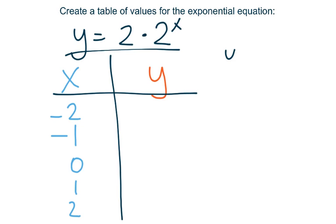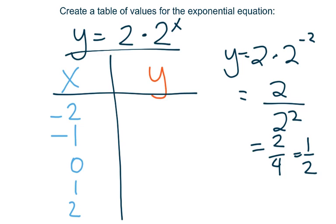I get y = 2·2^(-2), which equals 2 over 2 squared, which equals 2 over 4, which equals 1/2. So y equals 1/2 when x equals -2.